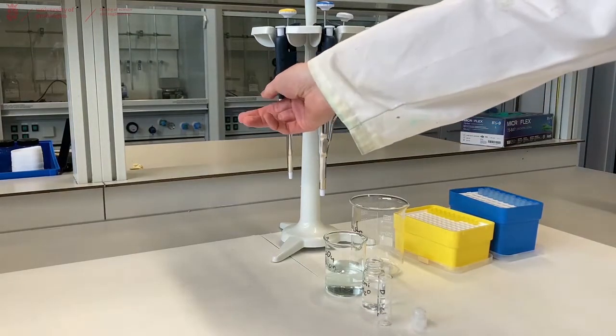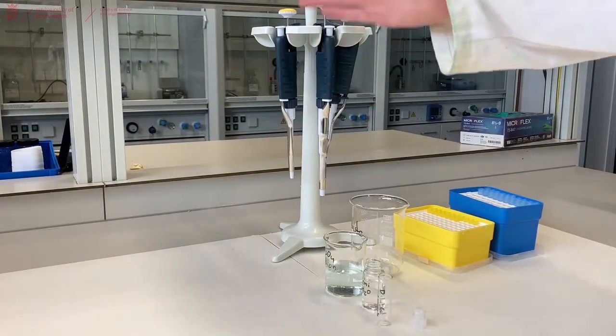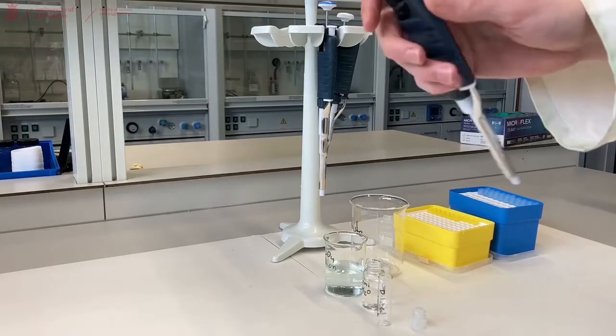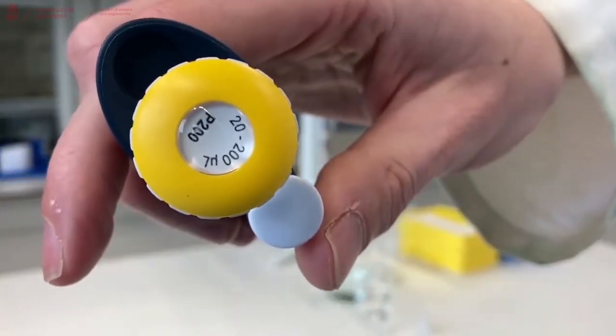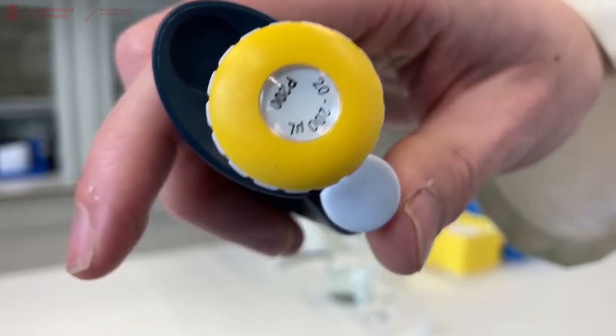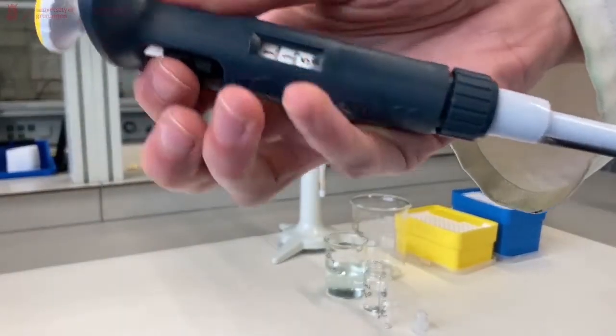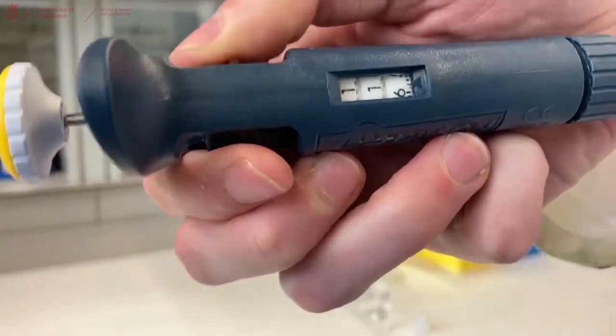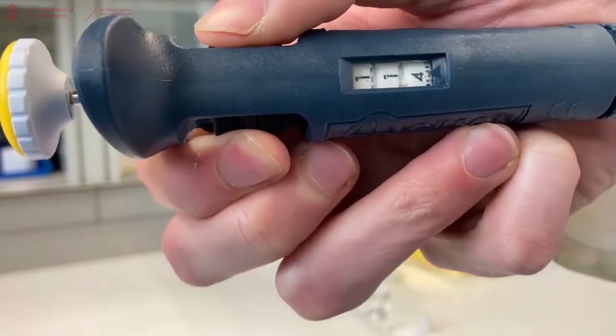Volumetric pipettes come in different volumes. The one I'm going to show you now has the volume on the top. This pipette has a range between 20 and 200 microliters. To set the volume you're going to use, you can look at the side where there's a wheel you can turn to see the volume that's actually being pipetted.